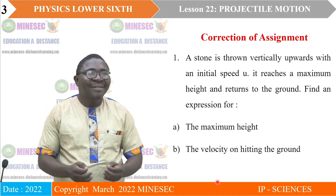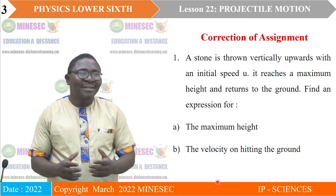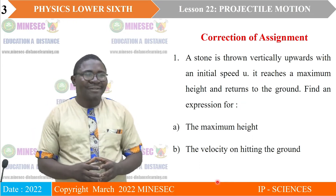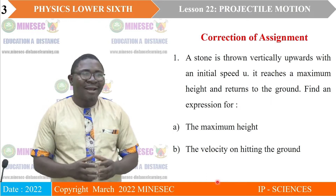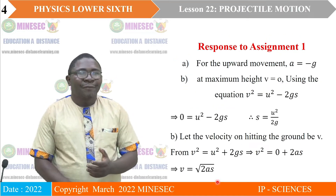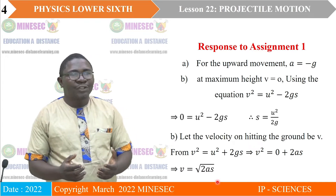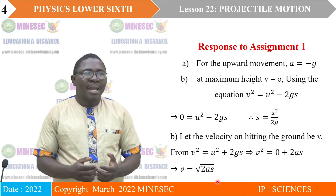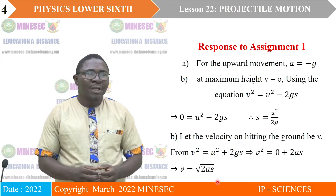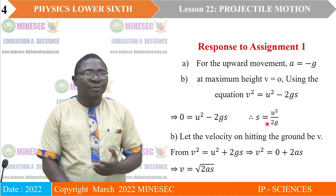I am sure each and every one of us answered this question, because if you had followed the lesson we had, you should not have had difficulties. But for those that tried and could not make it, you can compare your answers with this. For upward motion, G is negative, so acceleration a equals negative G. At maximum height, V equals zero, and using the equations of motion, S should be equal to U squared over 2G.